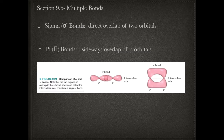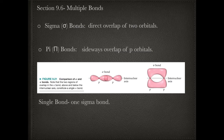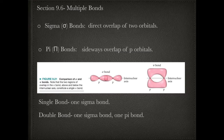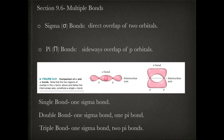Since there is a direct overlap for sigma bonds, sigma bonds are stronger than pi bonds. Determining when you have a sigma bond or a pi bond is actually easy. A single bond gives you one sigma bond. A double bond gives you one sigma bond and one pi bond. It's easy to predict what types of bonds you're going to have with multiple bonds.